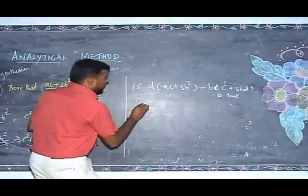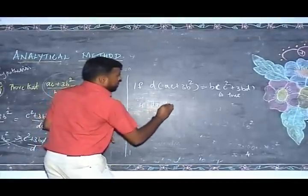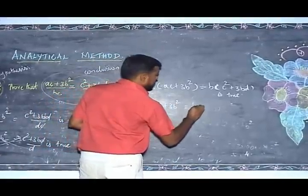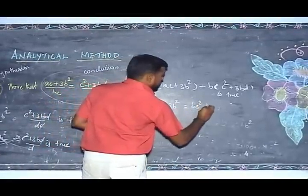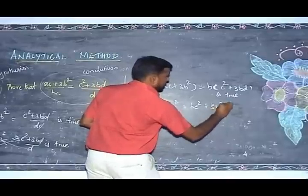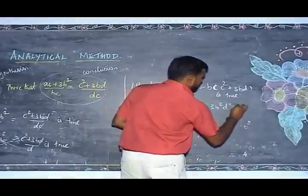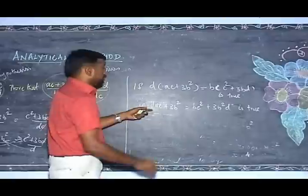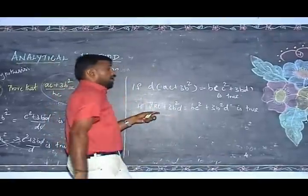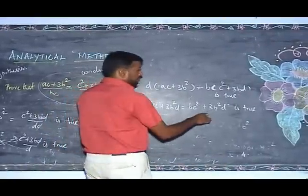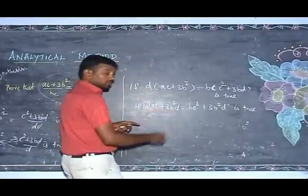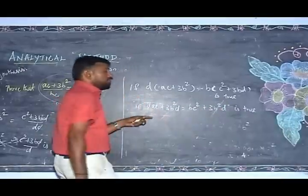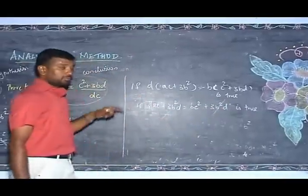Therefore, if DAC plus 3B squared D is equal to BC squared plus 3B squared D. On the left-hand side and right-hand side, 3B squared D appears on both sides and is the same, so I cancel 3B squared D from both sides.